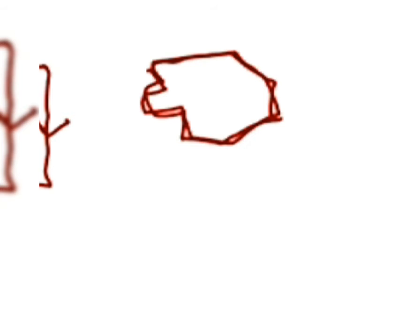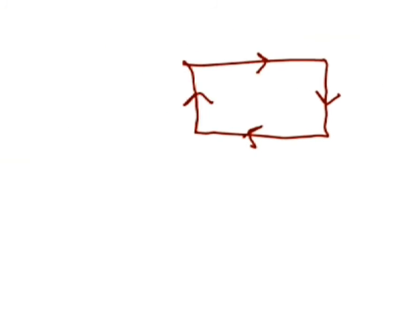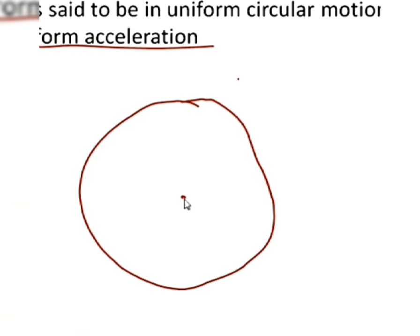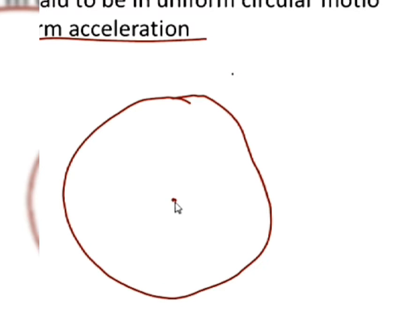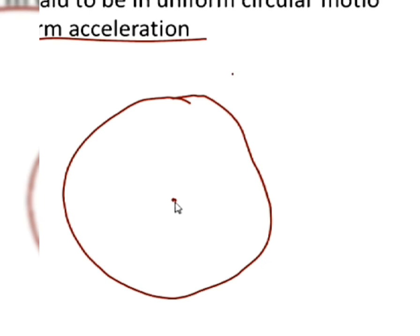Now if you consider a circular path, what happens? At every point, your velocity changes direction. That means your velocity is always changing with time. That is why we say that a body has uniform acceleration. Throughout the entire circumference, the velocity keeps changing its direction uniformly with time, and thus the body has uniform acceleration.